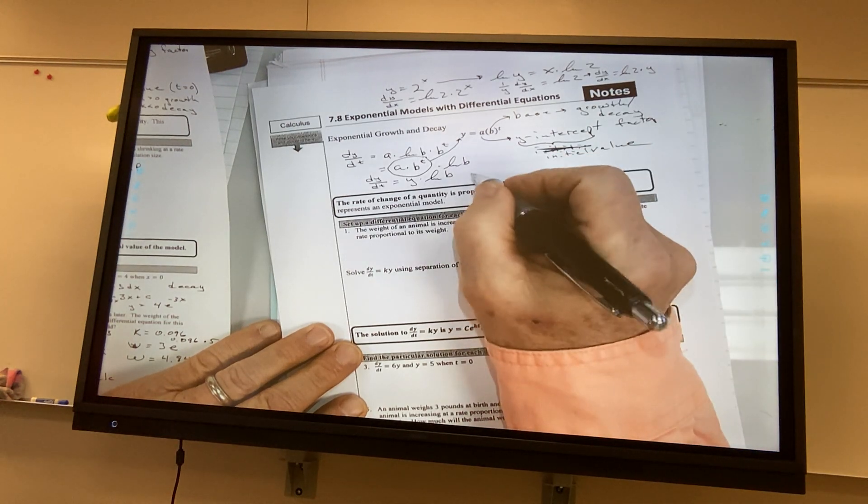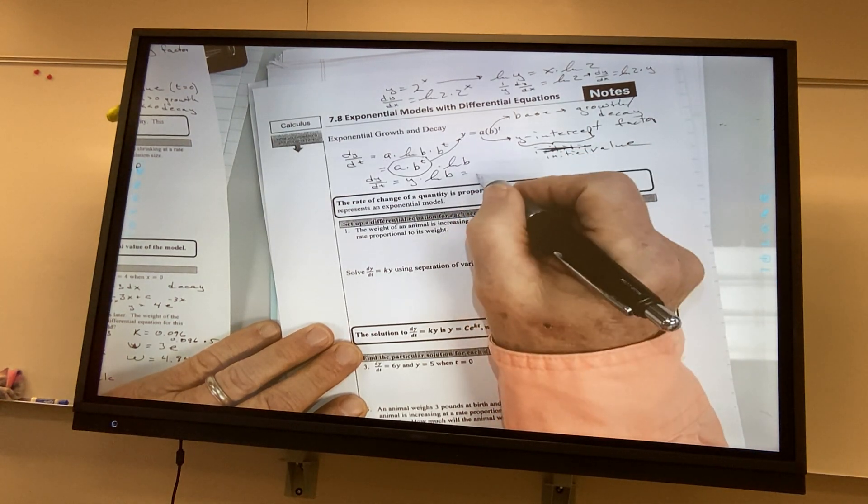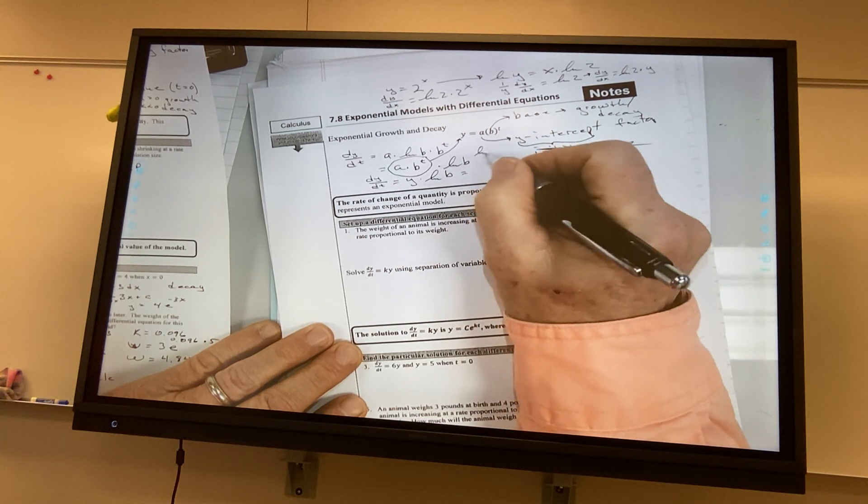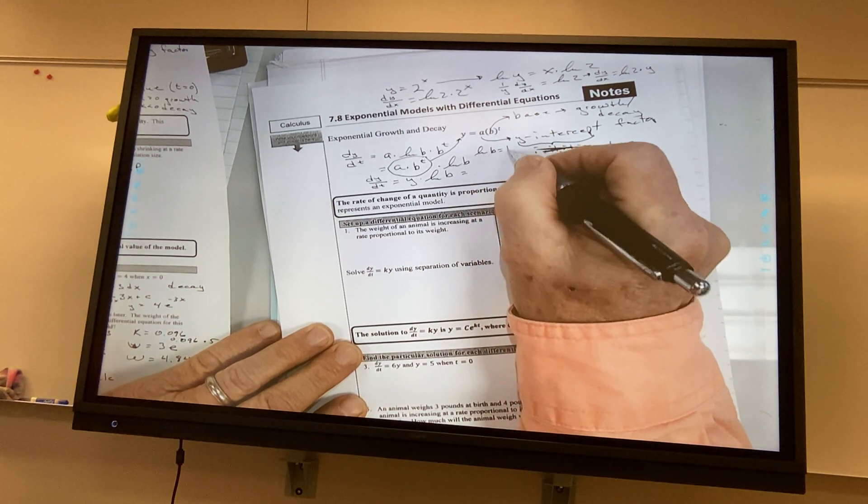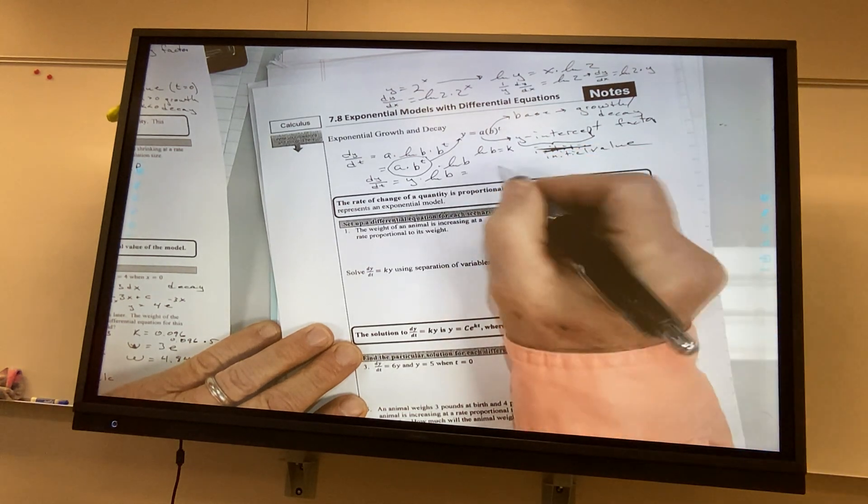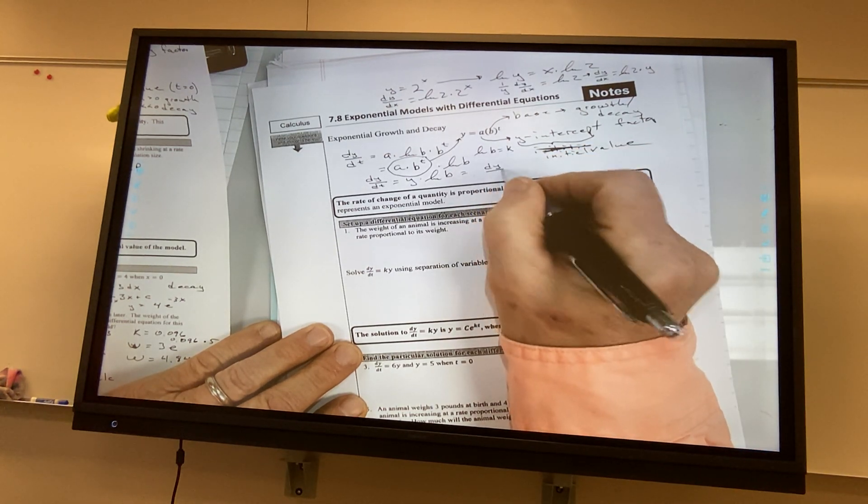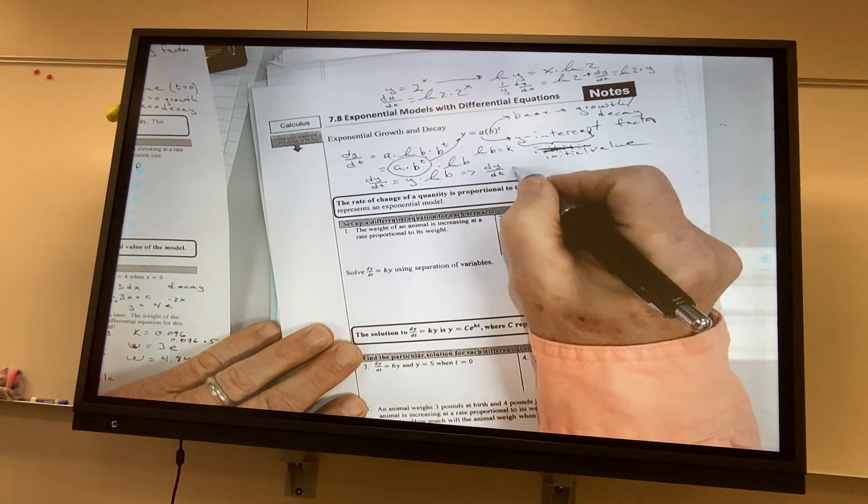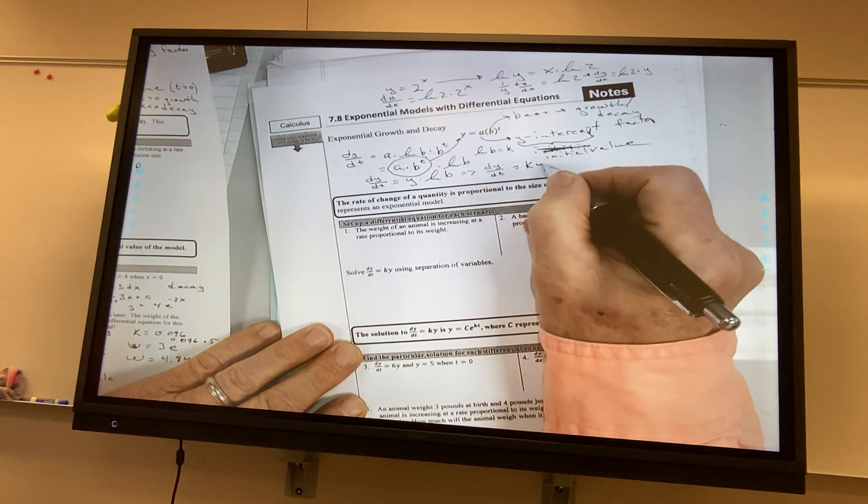And this natural log of b, I define as, I define as k, so dy over dt, the differential equation is in the form of k times y.